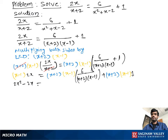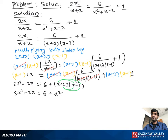Using the distributive property, the x plus 2 times x minus 1 terms cancel out, so we get 6 plus x plus 2 times x minus 1. We can write 2x squared minus 2x equal to 6 plus — then multiplying using the distributive property — x squared minus x plus 2x minus 2.